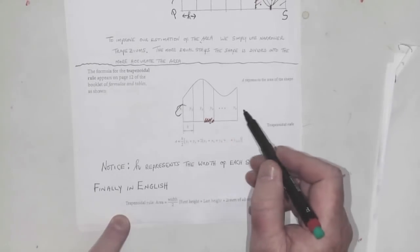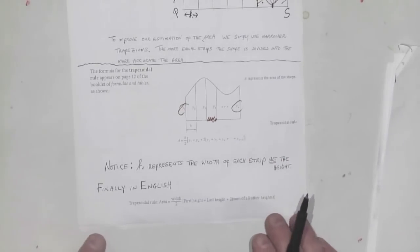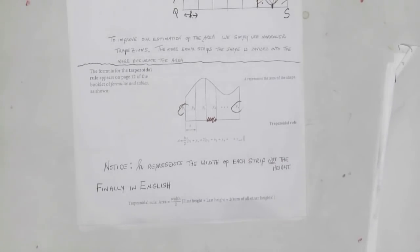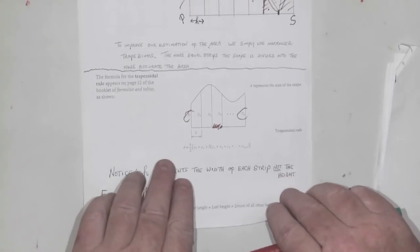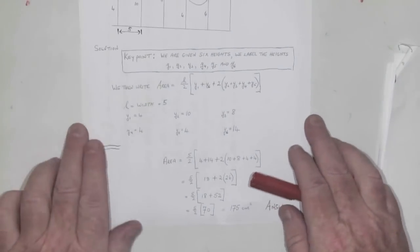In English, the trapezoidal rule says the area is the width divided by 2 times the first height plus the last height plus two times the sum of all the other heights.